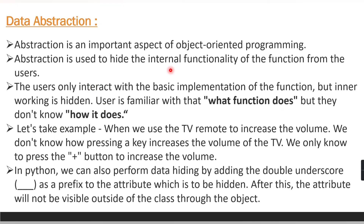When we want to hide data and only have it accessible inside the class, we can use the double underscore as a prefix to the attribute, which will then be hidden. That's it for this video. We will cover more on abstract classes in the next video. Thank you for watching.